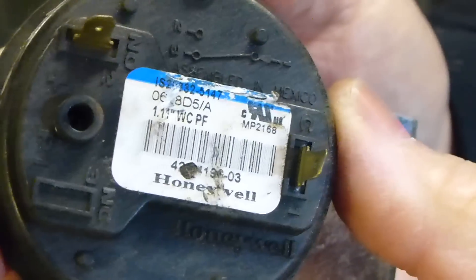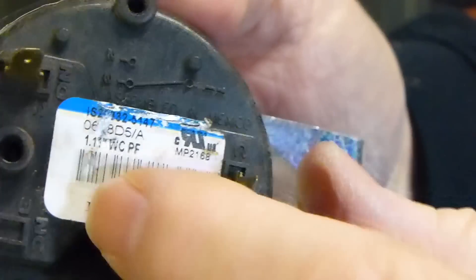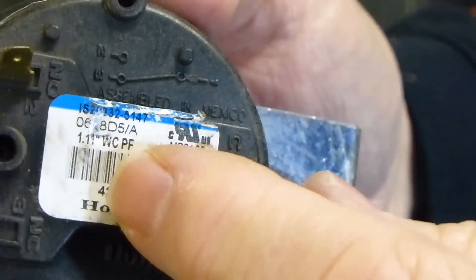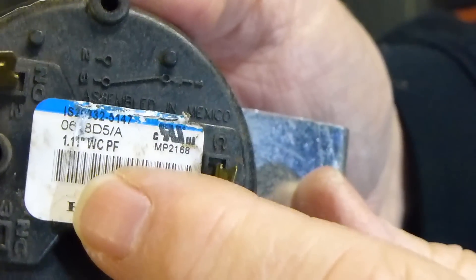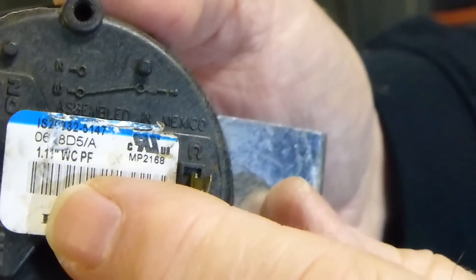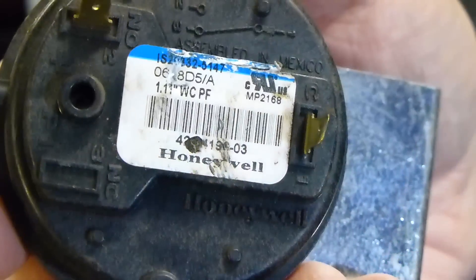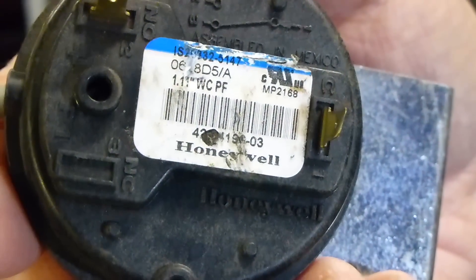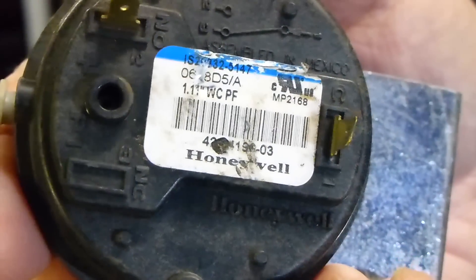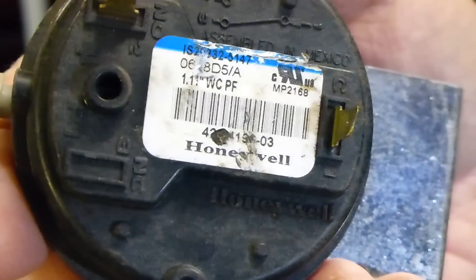I wanted to show you this particular pressure switch from Honeywell. This is a 1.11 WCPF, and I want you to pay attention to that WCPF. That means it's just a water column on pressure fall, so it must open within the rating of 1.11. Now, that being the case, like I said before, it's got to close within the 10% rating as well.